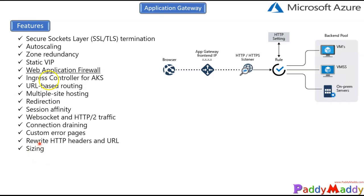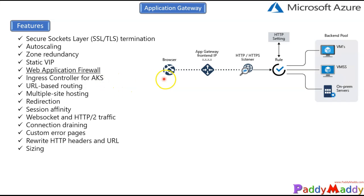Application Gateway supports SSL/TLS termination, auto-scaling, zone redundancy, and WAF — the Web Application Firewall — which consists of different rule sets that protect your application from attacks like SQL injection and cross-site scripting. It also supports ingress control for AKS Kubernetes services and URL-based routing.